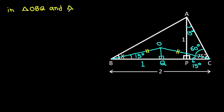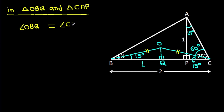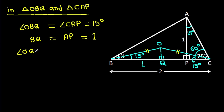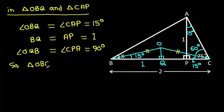In triangle CAP: angle OBQ is equal to angle CAP, that is 15 degrees, and BQ is equal to AP, that is 1. And angle OQB is equal to angle CPA, that is 90 degrees.